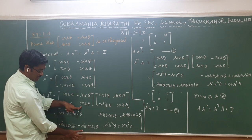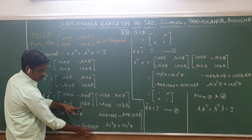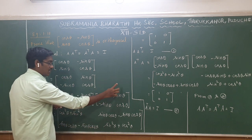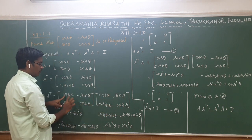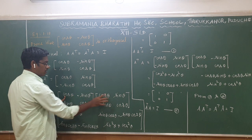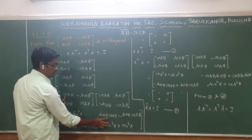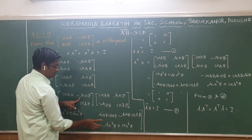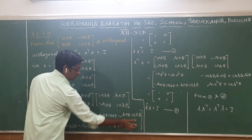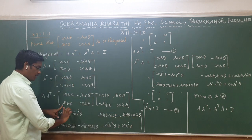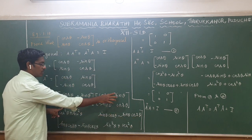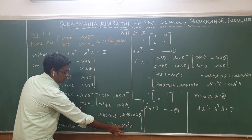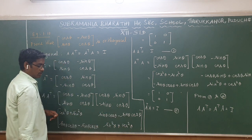For the (1,2) element: cos θ × sin θ = sin θ cos θ, then minus sin θ × cos θ = sin θ cos θ, with opposite signs. For the (2,2) element: sin θ × sin θ = sin²θ, then cos θ × cos θ = cos²θ.